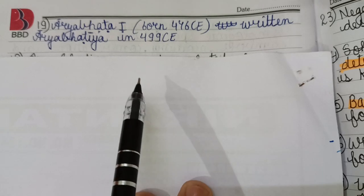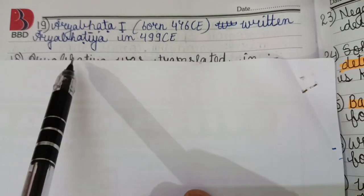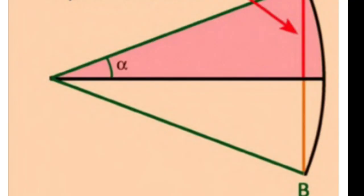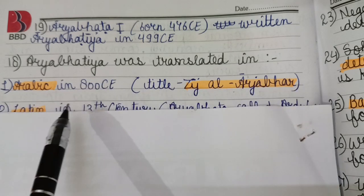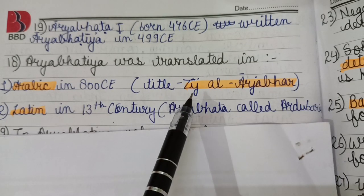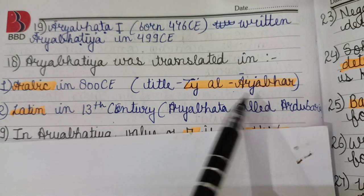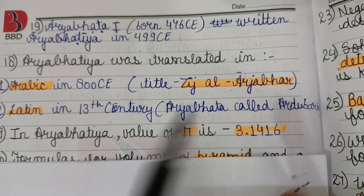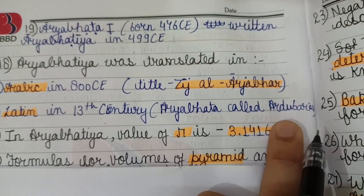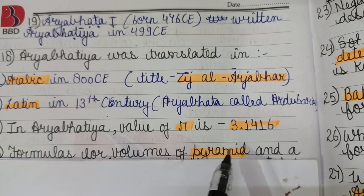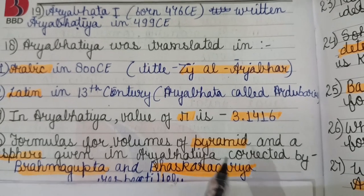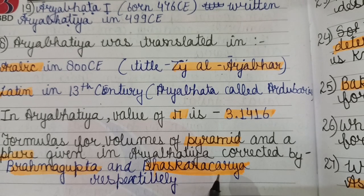Aryabhatta was born in 476 CE and wrote the Aryabhatiya in 499 CE. It was translated into Arabic in 800 CE under the title Zij al-Arjabhar, and into Latin in the 13th century as Arduveris. In the Aryabhatiya, the value of Pi is given as 3.1416, along with formulas for the volumes of a pyramid and a sphere.